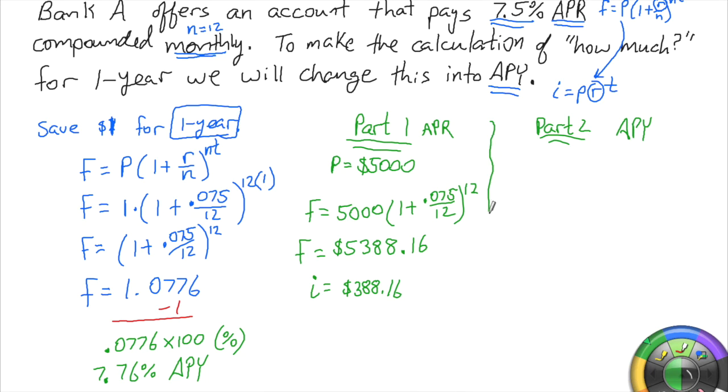Part two, if we just have a four-function calculator, we would set up I equals PRT. Since it's simple interest, we can just go right for what the interest is. We're depositing $5,000.